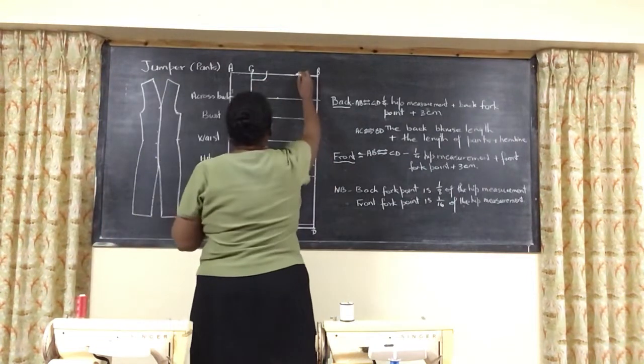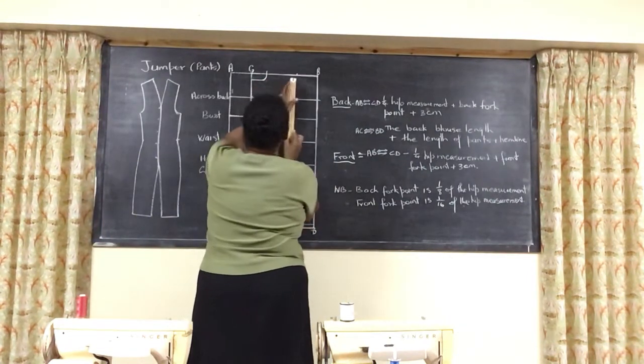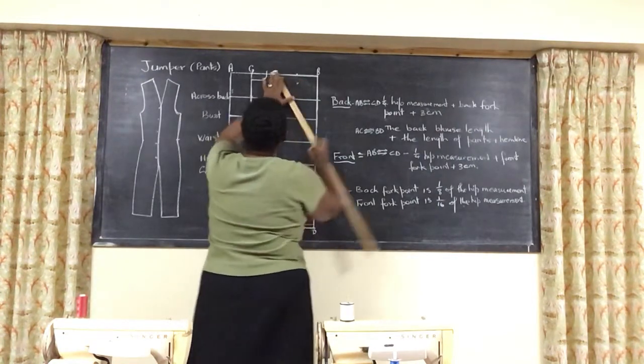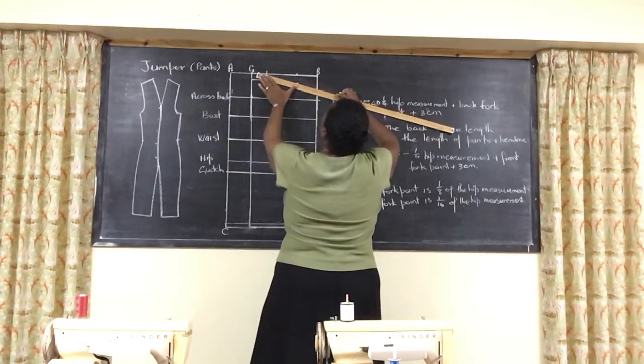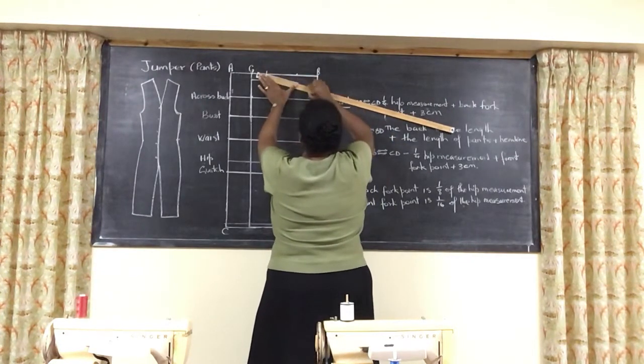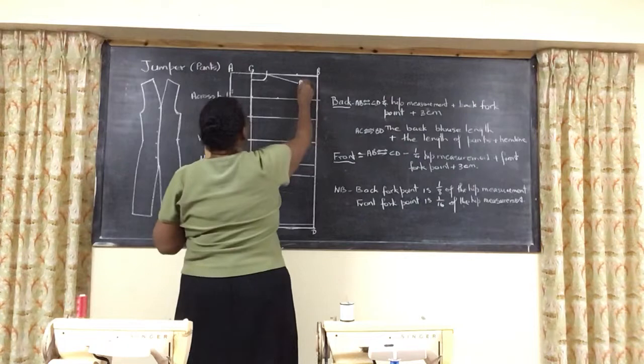Then you are going to do your shoulder. And remember, to get K, we come down four centimeters. So you get your K line there. So that's your shoulder slope.